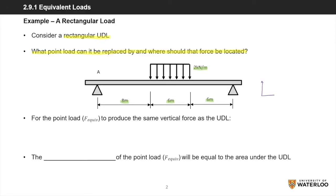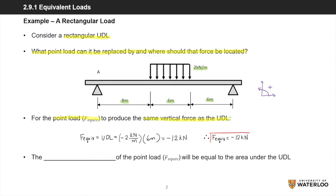Recall the coordinate system with positive forces acting upwards and to the right, and positive moments rotating counter-clockwise. To create a point load equivalent to the UDL, which we will call F-equiv, we multiply the distributed force of negative 2 kN per meter — negative because it is acting downwards — with the length of the UDL of 6 meters. This gives us an answer of negative 12 kN. The magnitude of F-equiv equals the total force, or the area under the UDL.